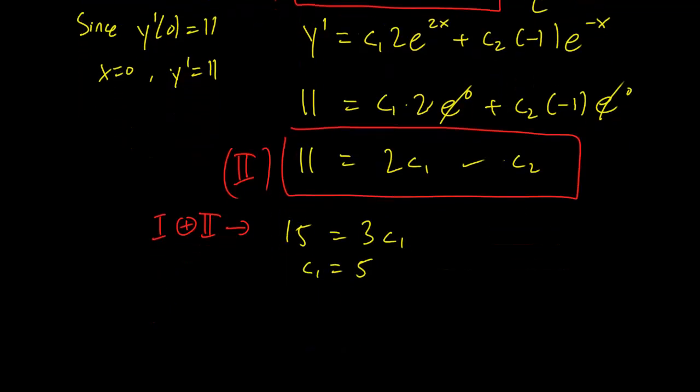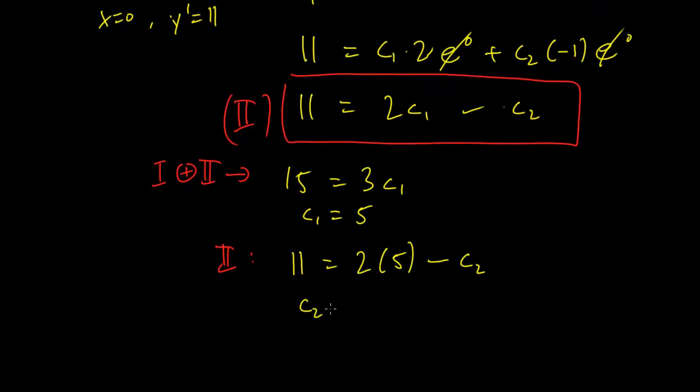But if c1 equals 5, this implies that from equation 2 that 11 equals 2 times 5 minus c2. So c2 is equal to, oh wait, no it's not, it's equal to minus 1.